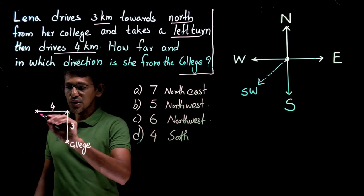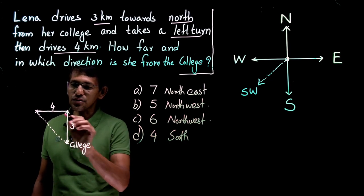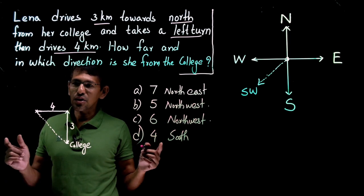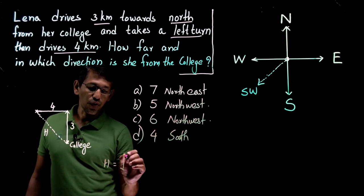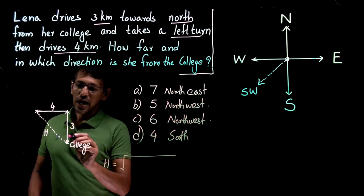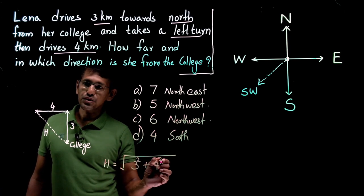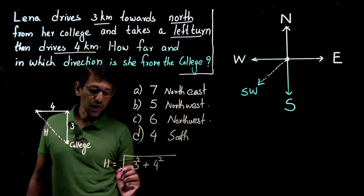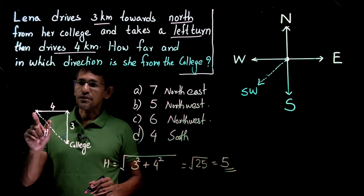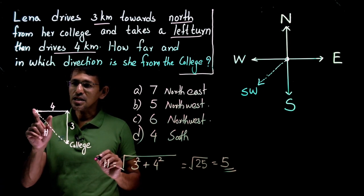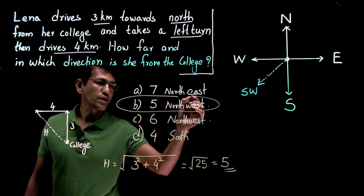Using the right-angled triangle theorem: hypotenuse = √(height² + base²). Height is 3 km and base is 4 km. So it is √(3² + 4²) = √(9 + 16) = √25 = 5. The distance is 5 kilometers, and the direction is Northwest. So the answer is 5 kilometers Northwest.